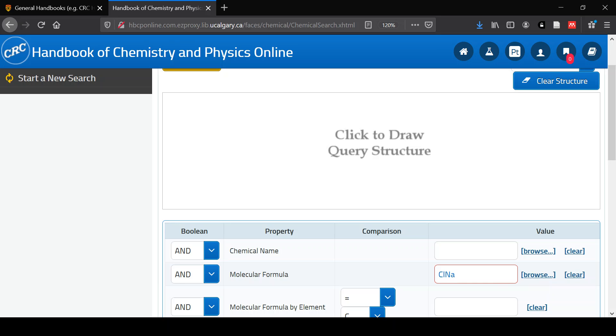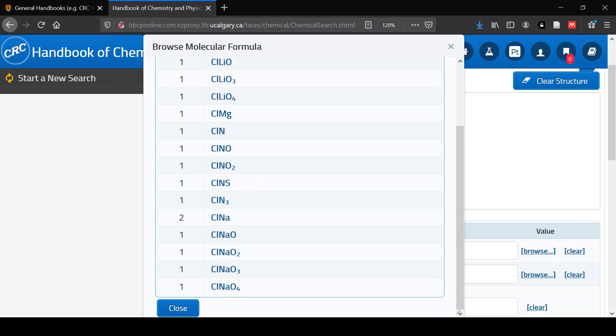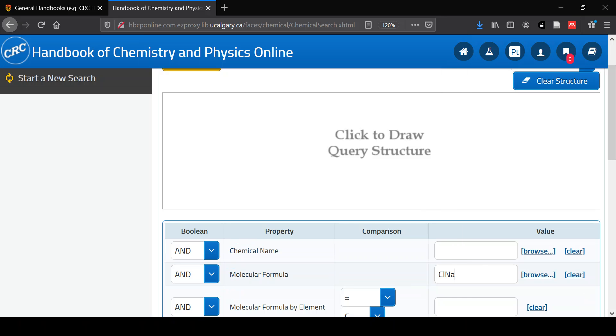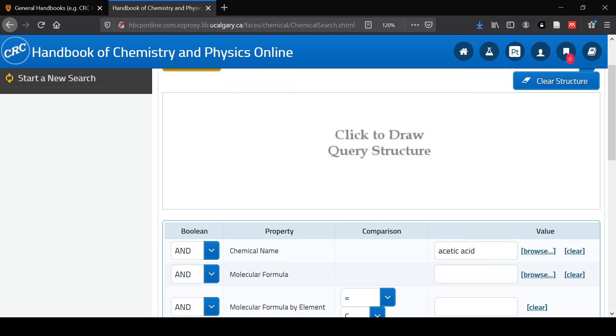If you're not sure that the search is going to work, you can browse and see if you can find your search string listed. So here I can find sodium chloride listed this way so I know that I've typed the search in correctly. Same thing for acetic acid. If I browse that, I know that there's going to be something for acetic acid because it's showing up in this browse list.